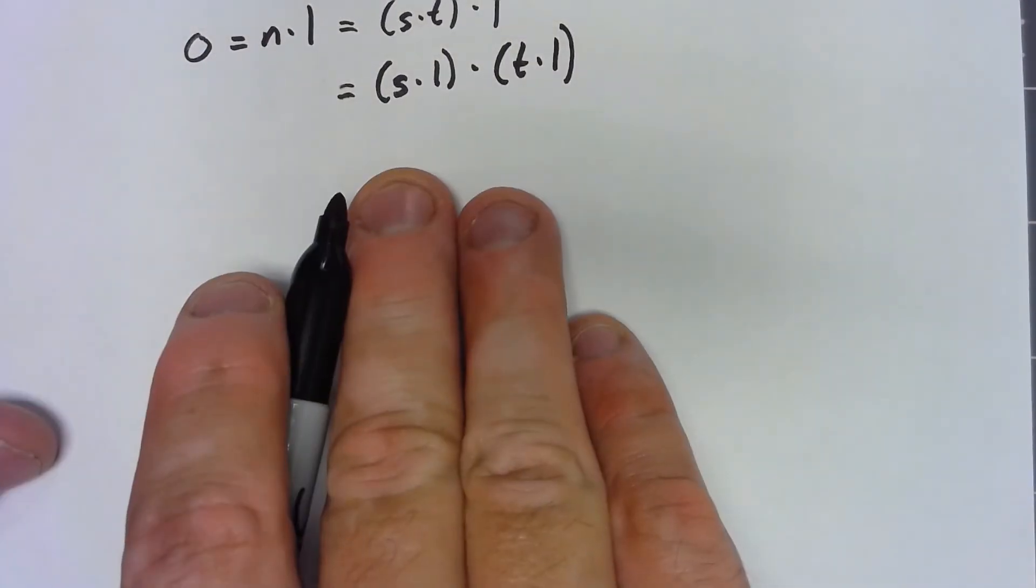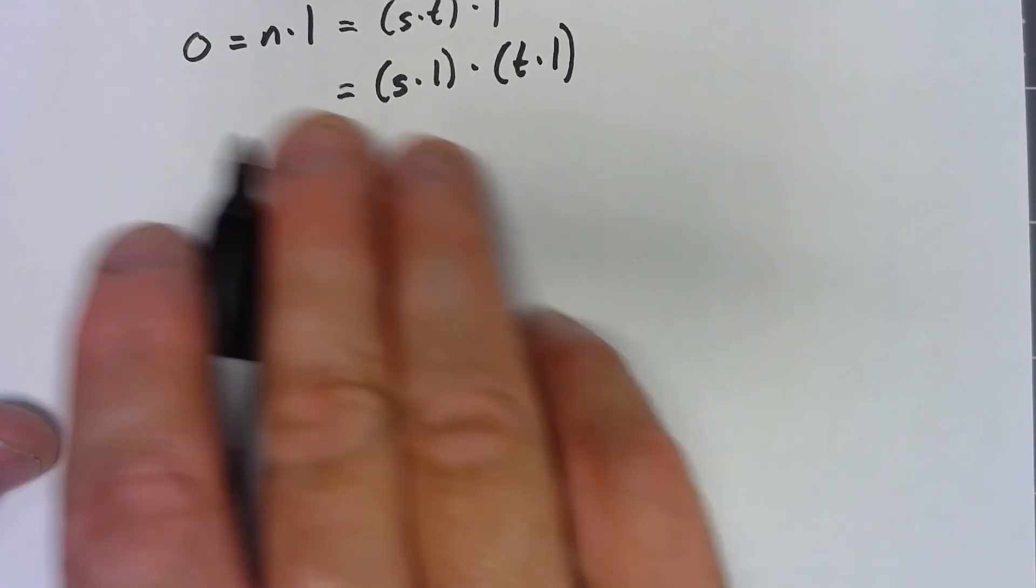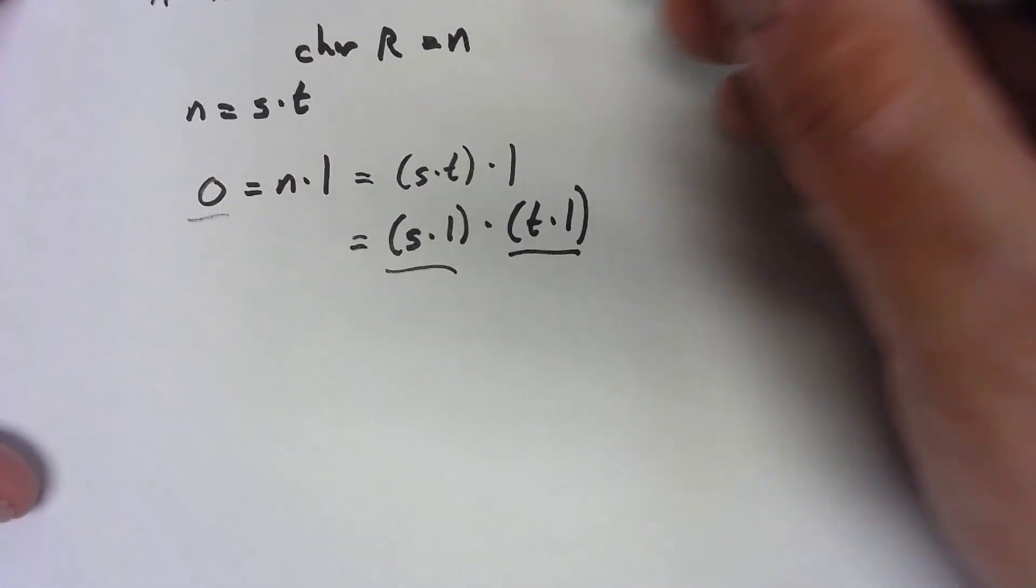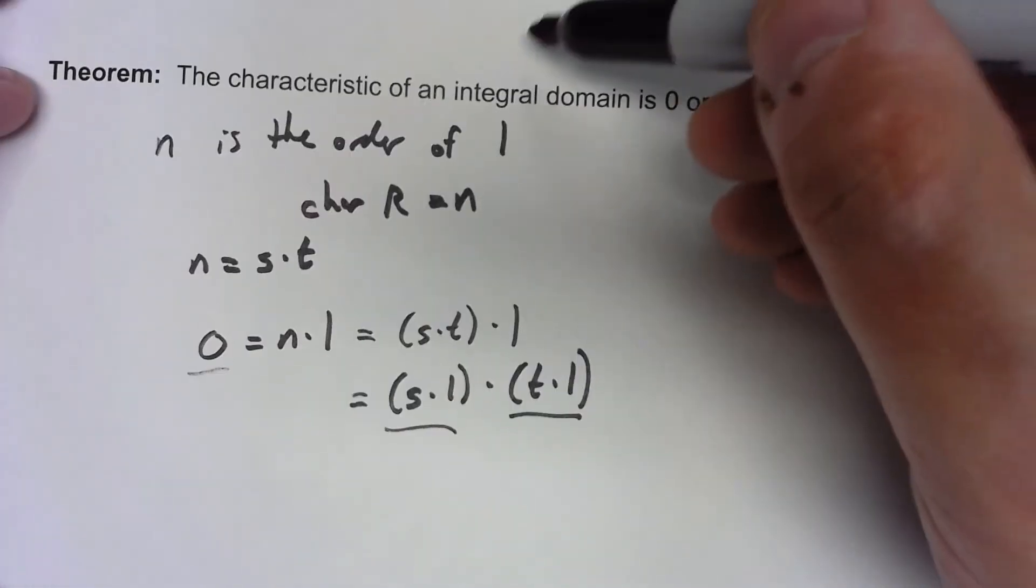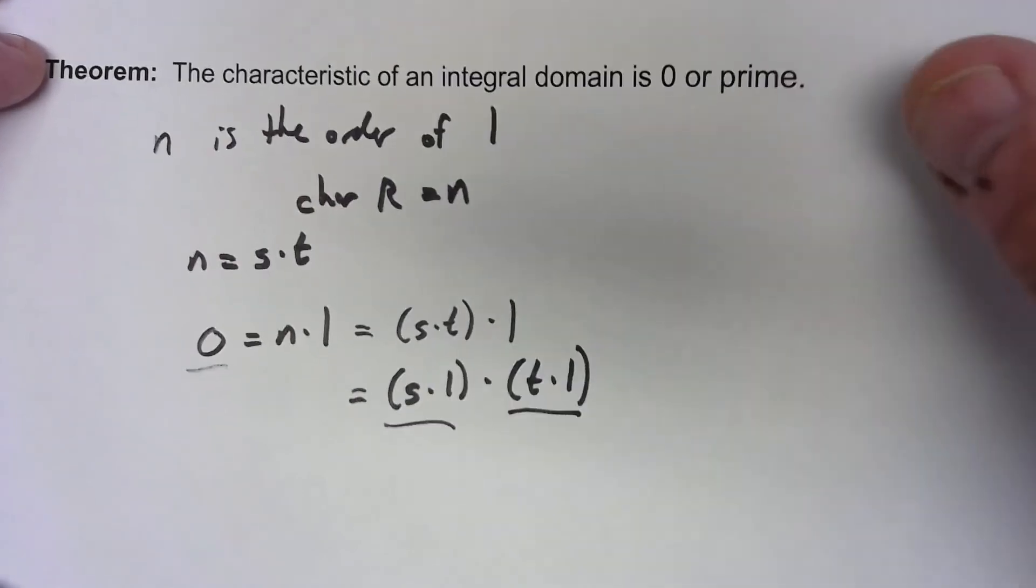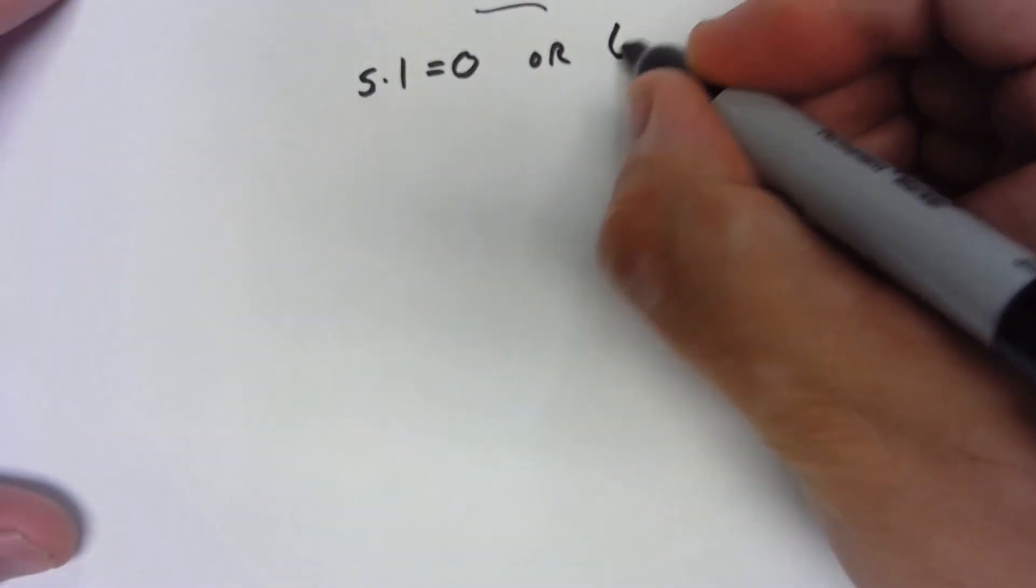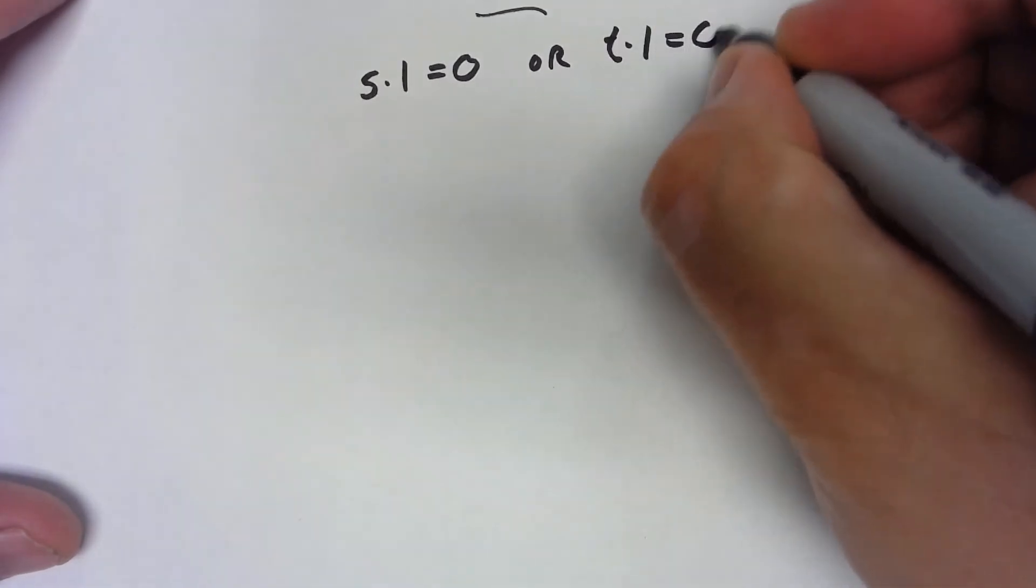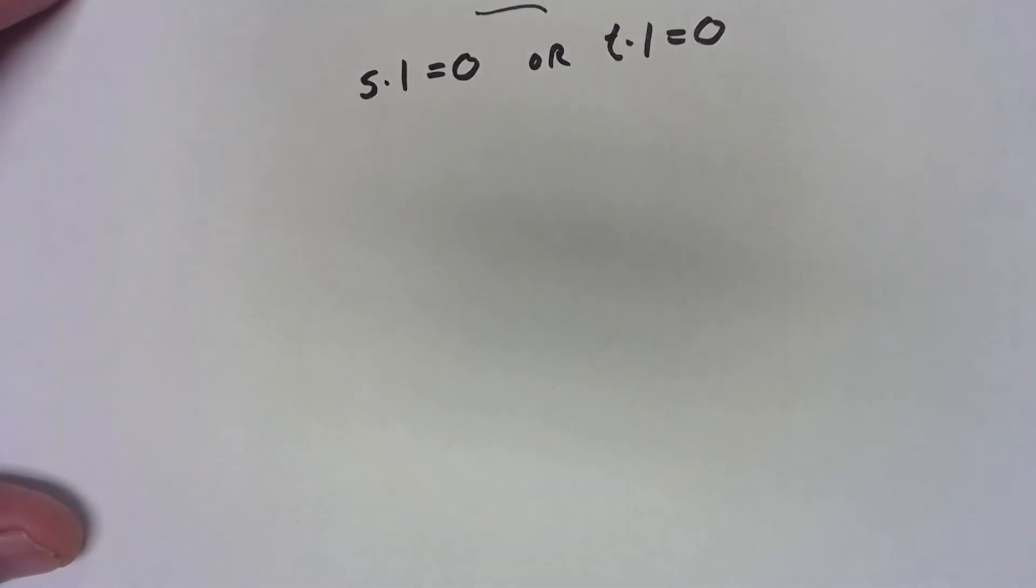But that's the same thing as (s times 1) times (t times 1). And now let's think about this. What we have here is that this element times this element equals 0. But we're in an integral domain, which means that we don't have any zero divisors. Since we don't have any zero divisors, that either means that s times 1 could equal 0 or t times 1 would have to equal 0. One of those two things has to be true.